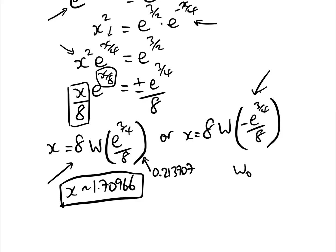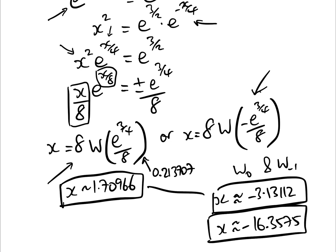We get two solutions. And the two solutions are w0 and w minus 1. So we either have the w0 solution is x is approximately minus 3.13112. And the w minus 1 solution is x is approximately minus 16.3575. And they are our three solutions coming from w0 and w minus 1 here and just w0 here.